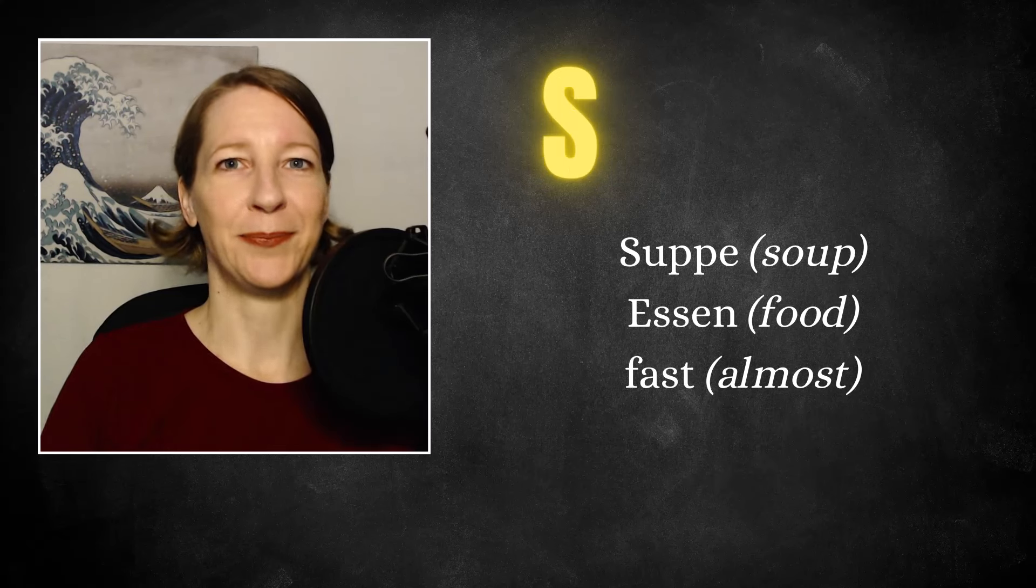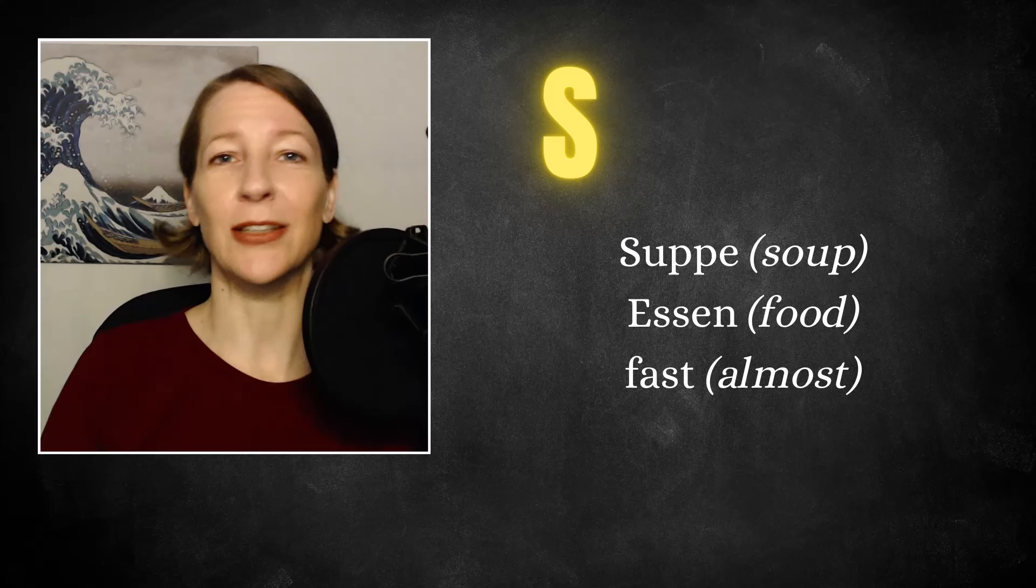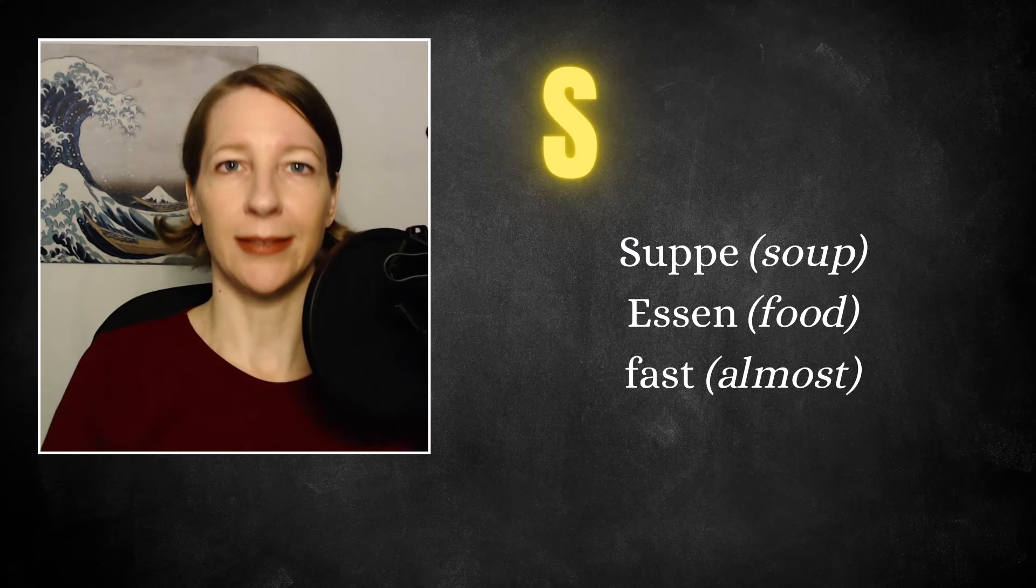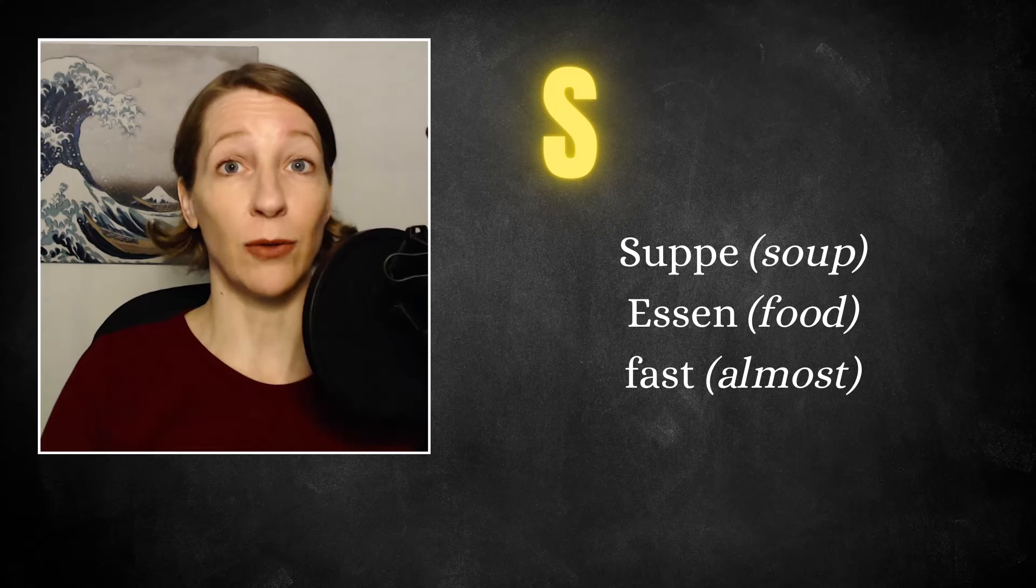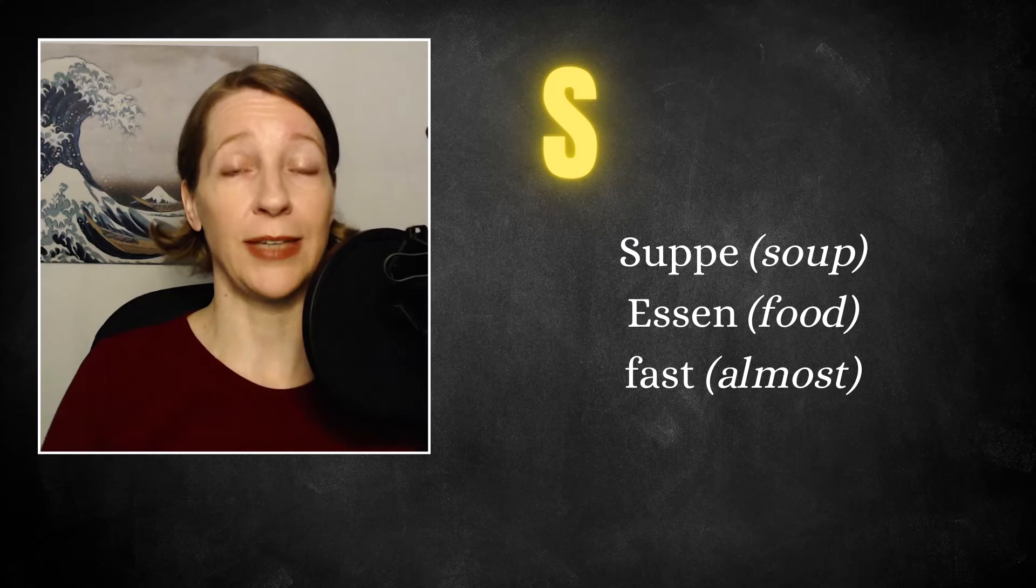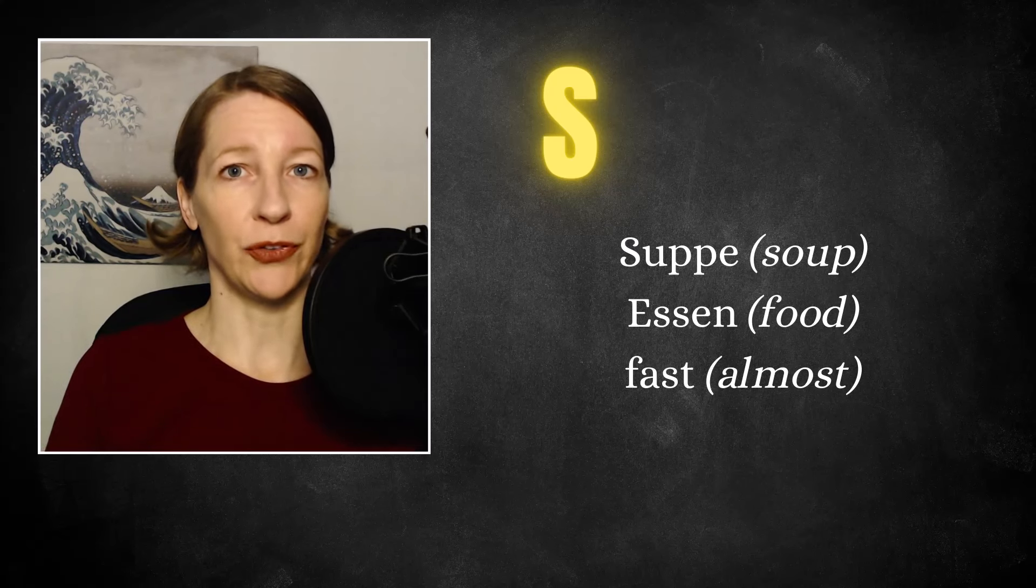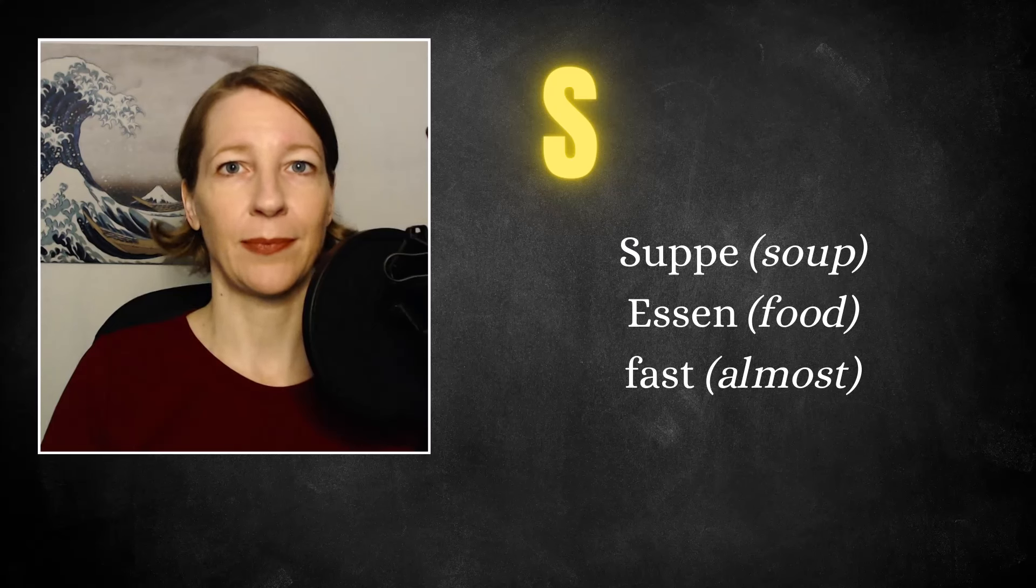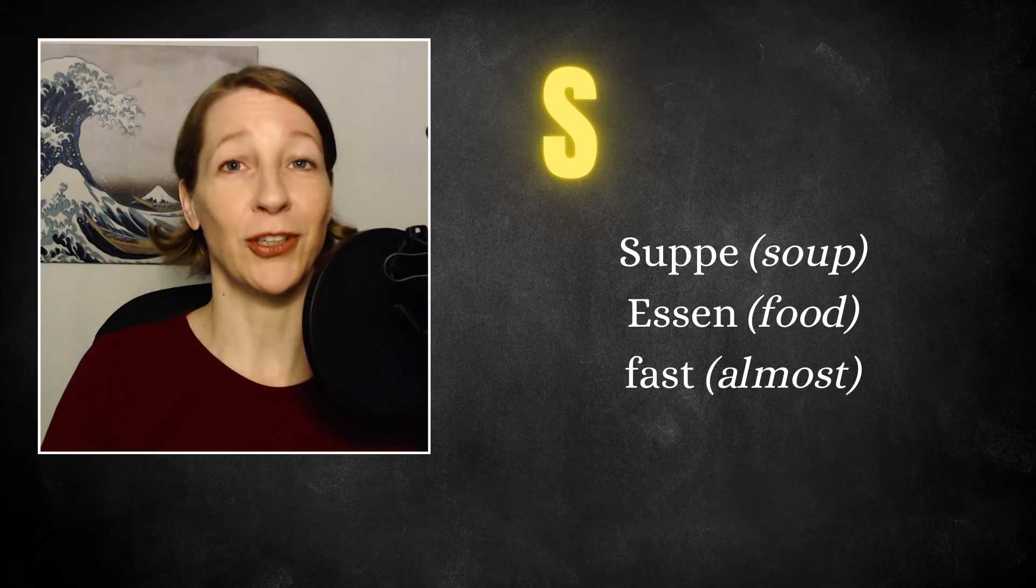S. Now the S can be pronounced in different ways. One is a Z using your voice, Z as in Suppe. This is usually used when the S is followed by a vowel. We also have the sharp version of the S. And we use that when we don't have a vowel following or when we have a double S, for example, in the word Essen. As a singular sharp S in the word Fast.